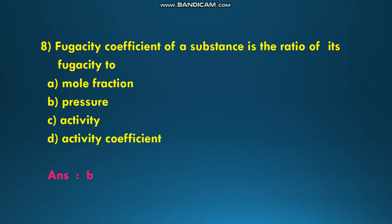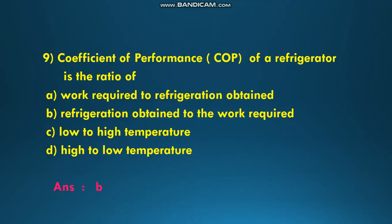Next question is: fugacity coefficient of a substance is the ratio of its fugacity to what? The options are A: mole fraction, B: pressure, C: activity, and D: activity coefficient. Among this, the answer is pressure. Fugacity coefficient phi is equal to f by p, so the answer is B.